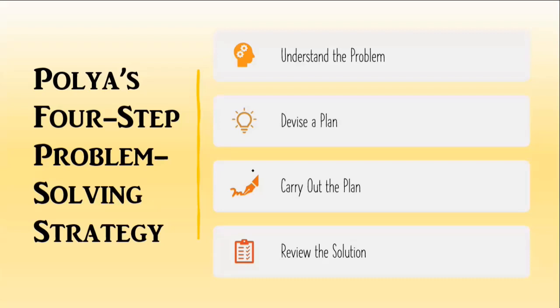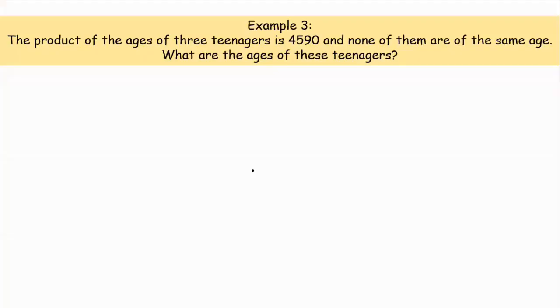We'll apply this strategy to example number three. The product of the ages of three teenagers is 4,590. None of them are of the same age. What are the ages of these teenagers? So, we have to understand the problem.